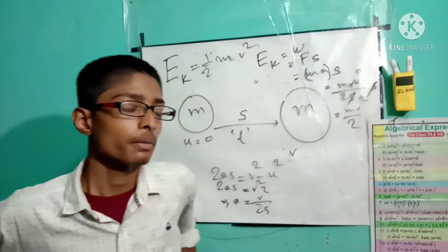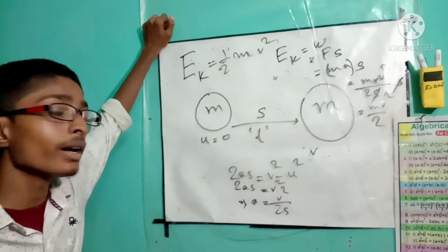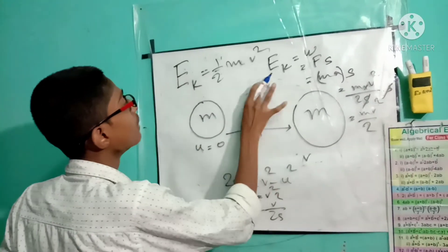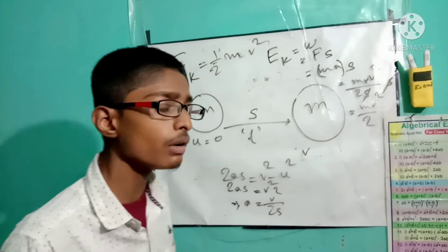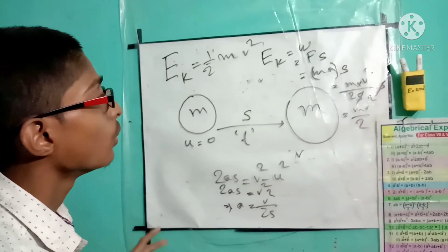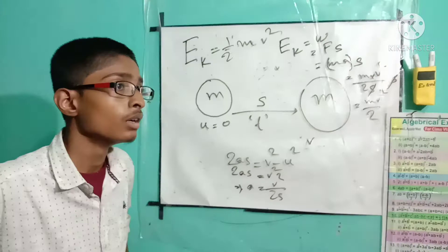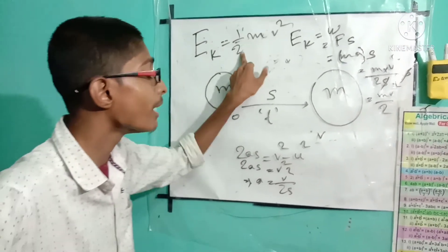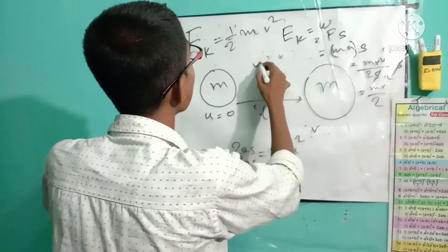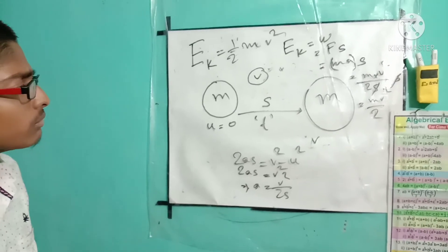It was a very simple derivation. You should know that this equation is not valid when an object travels at the speed of light, C — this equation is incomplete in that case. This equation is valid only if the body travels at a speed v that is not comparable to C, meaning v is much, much smaller than C. In a later video I will try to derive the complete equation for a particle traveling at the speed of light.